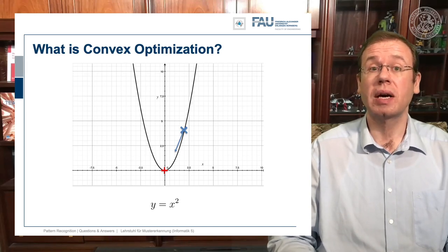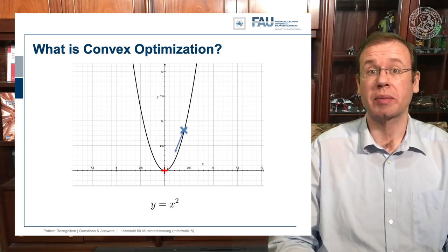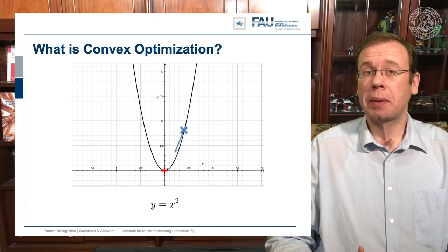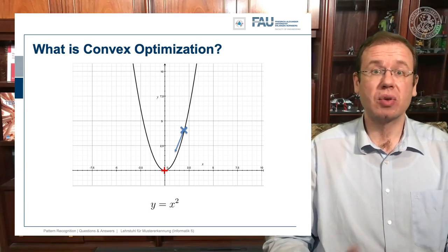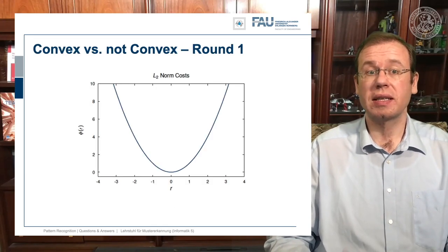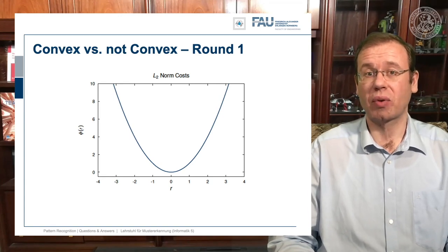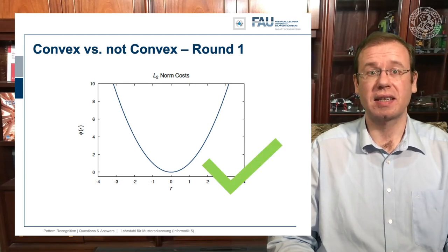This is why many people like to do convex optimization and try to find mechanisms to formulate a specific problem convexly, and then you get these very nice solutions. I prepared a little quiz on what is convex and what is not. Round one — convex versus not convex: this function — you've probably seen it before. And the answer is yes, this is a convex function.